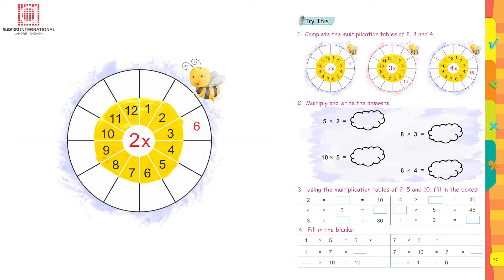For the table of 2: 2 ones are 2, 2 twos are 4, 2 threes are 6, 2 fours are 8, 2 fives are 10. You have to learn these tables by heart to attempt these questions.